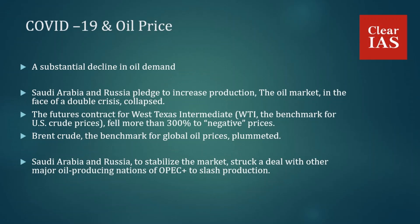Saudi Arabia announced that it would increase its production from 9.7 million barrels per day to 12.3 million, while Russia planned to increase oil production by 300,000 barrels a day. Saudi Arabia also announced price discounts in March 2020.